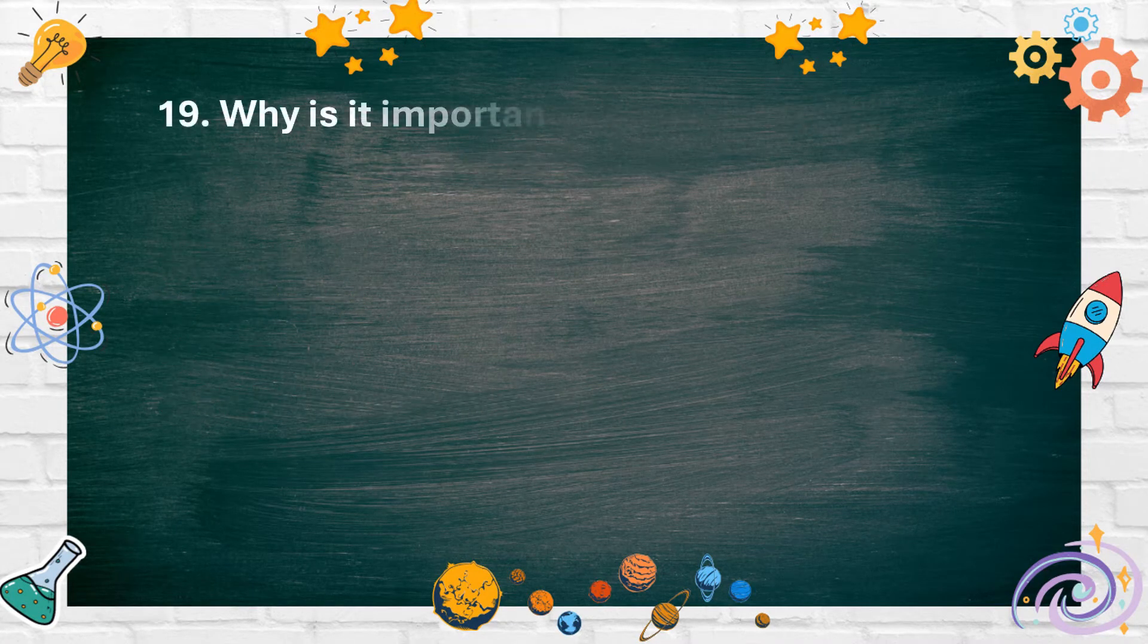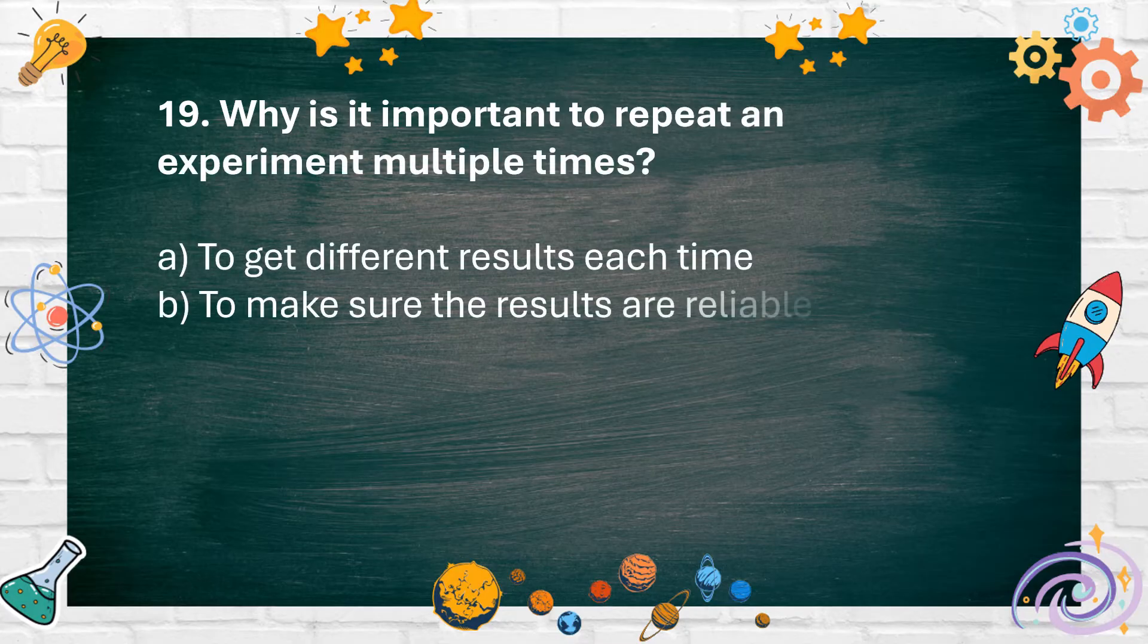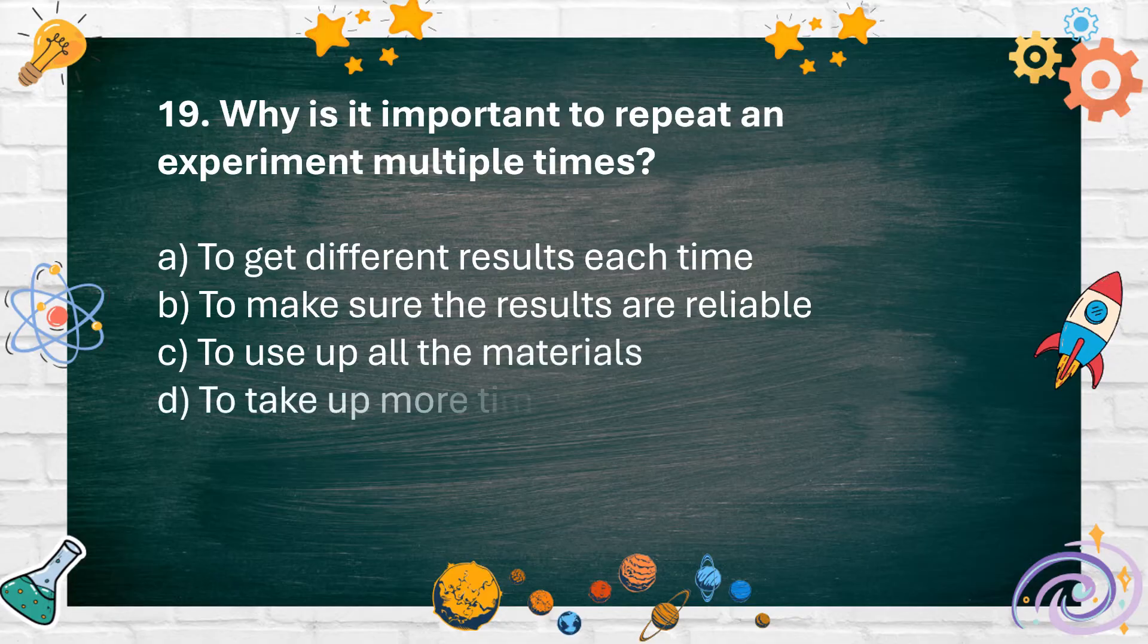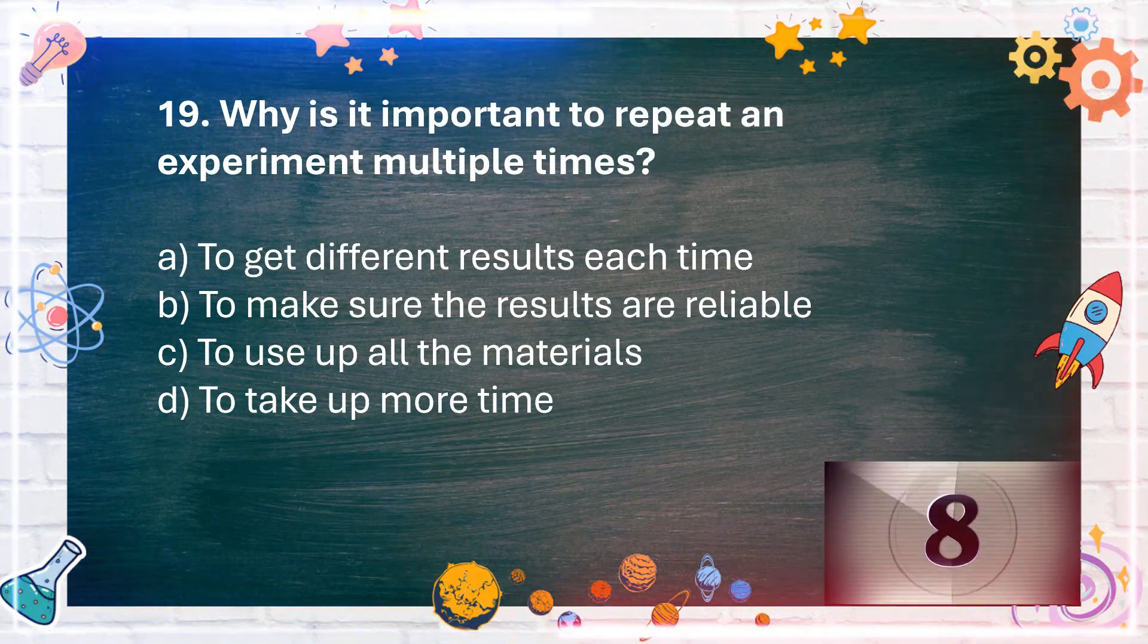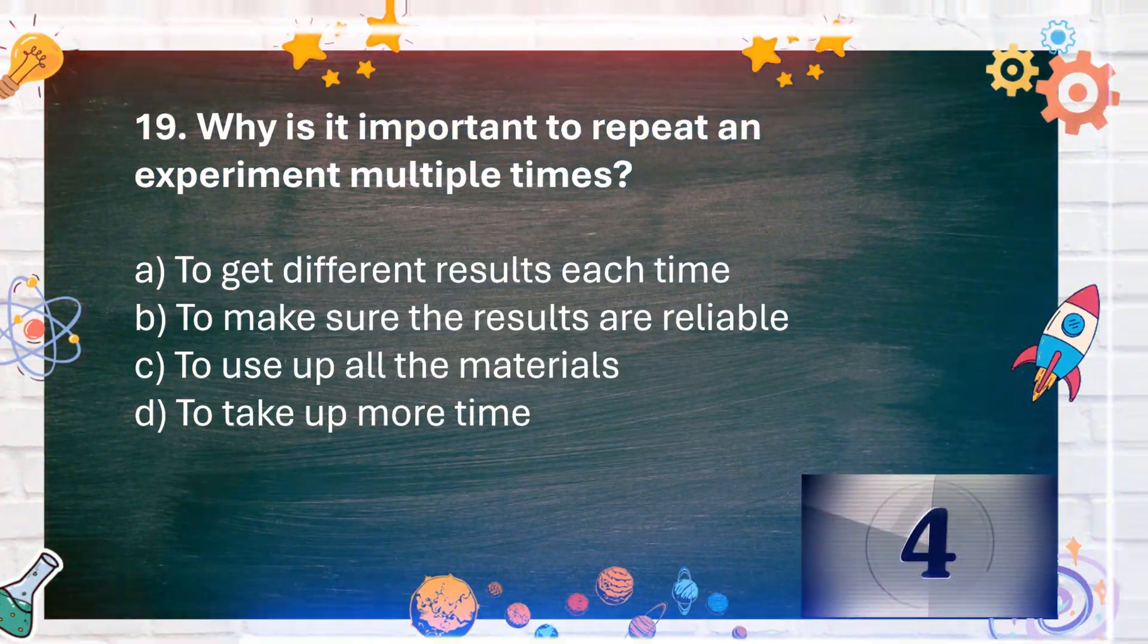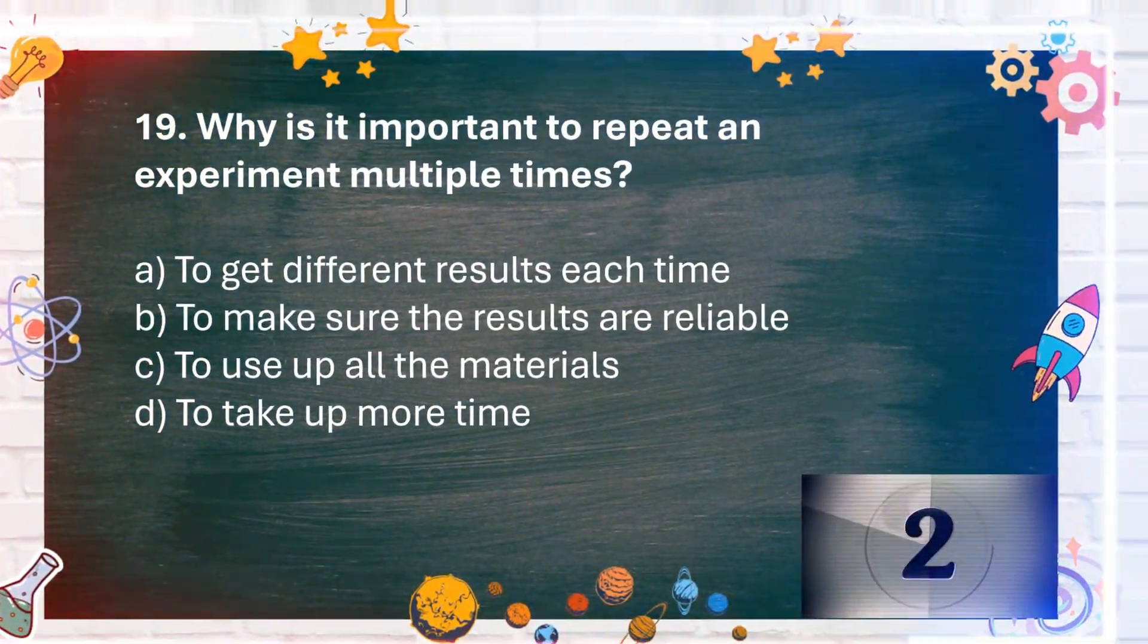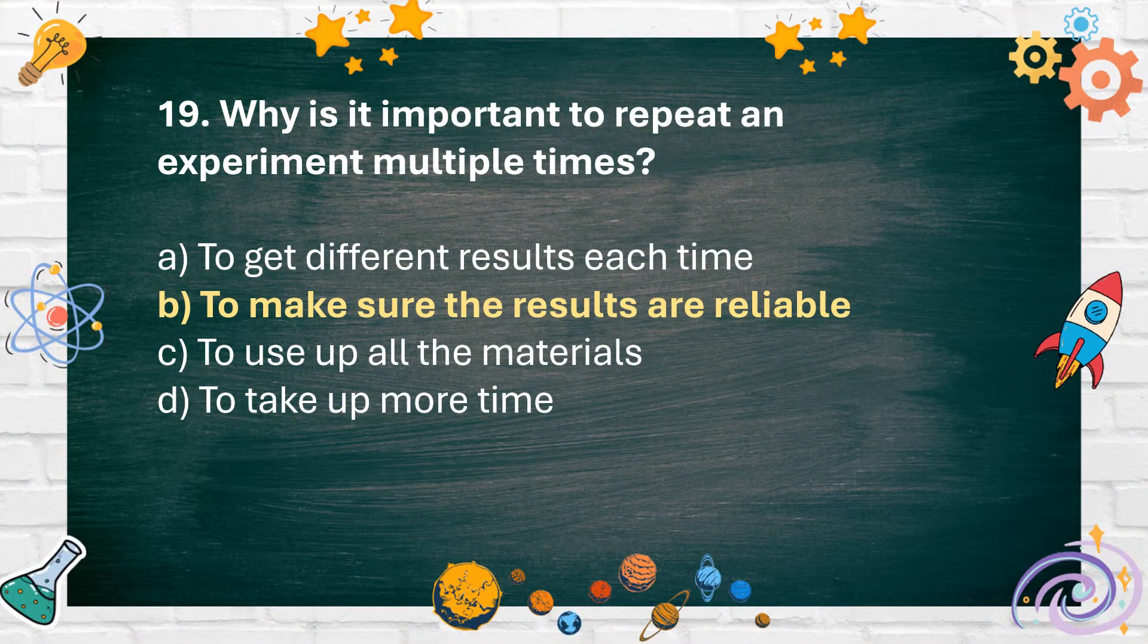Number 19: Why is it important to repeat an experiment multiple times? A. To get different results each time, B. To make sure the results are reliable, C. To use up all the materials, D. To take up more time. The answer is B. To make sure the results are reliable.